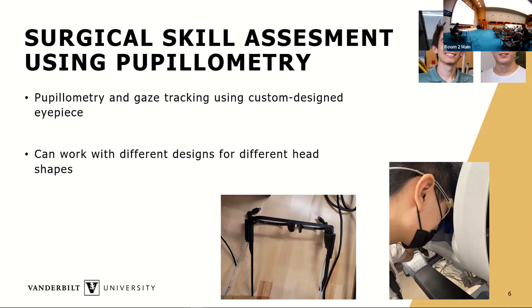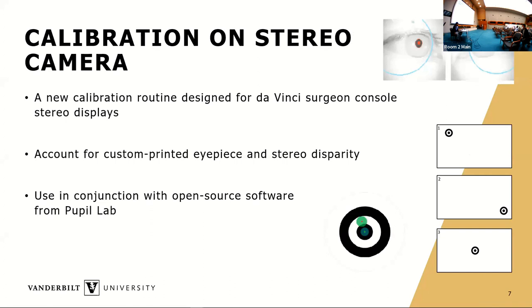We thought we could compensate by mounting sensors directly on their eyes using an eyeglass frame. But commercial systems were designed for looking at the world normally, not looking down into a surgeon console, which is how surgeons actually use it. Commercial trackers didn't work well for that viewing angle. So we 3D printed our own frame and mounted Pupil Labs sensors on it, which then brought us to the challenge of calibration.